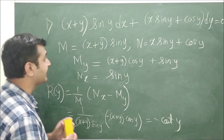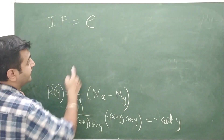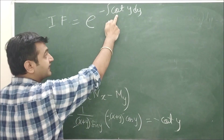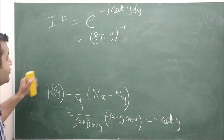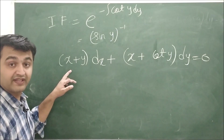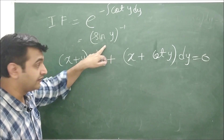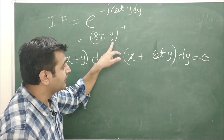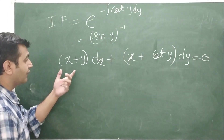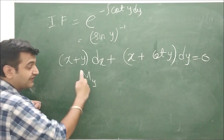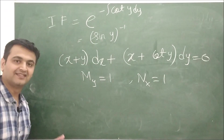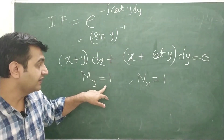Since r(y) = −cot y is independent of x, the integrating factor is e raised to the integral of −cot y dy. Since ∫cot y dy = ln|sin y|, we get e^(−ln|sin y|) = 1/sin y. Multiplying the original equation by 1/sin y gives (x + y) dx + (x + cot y) dy = 0. Checking: ∂M/∂y = 1 and ∂N/∂x = 1, confirming this new equation is exact.